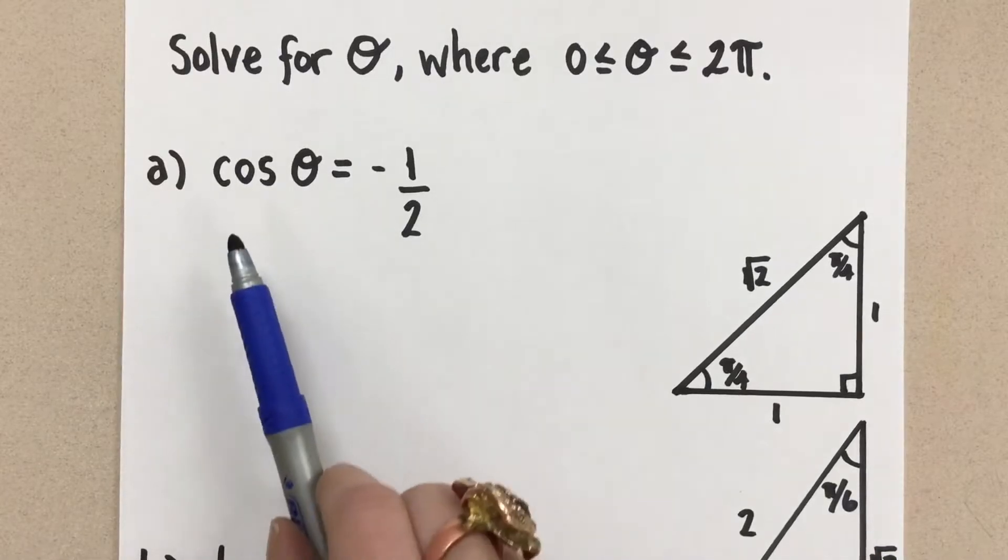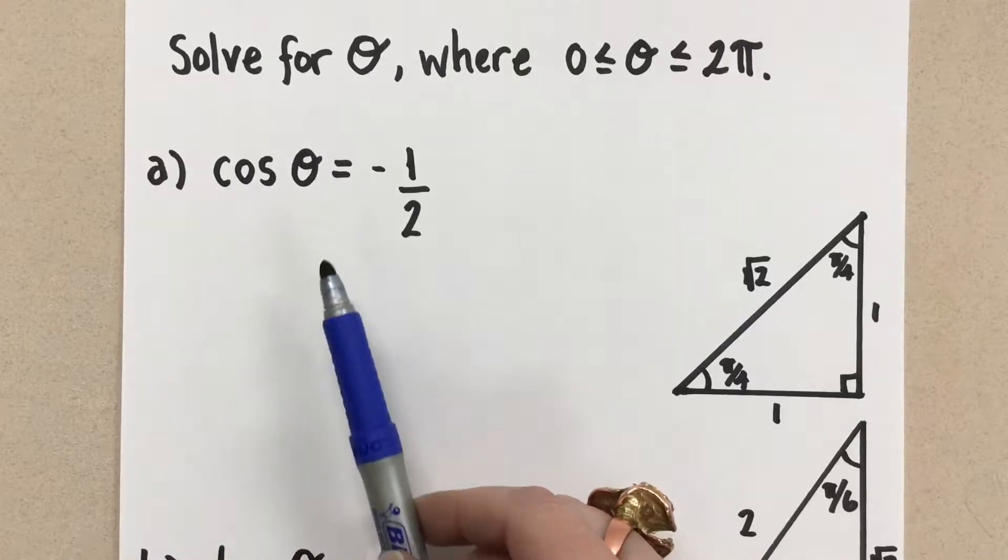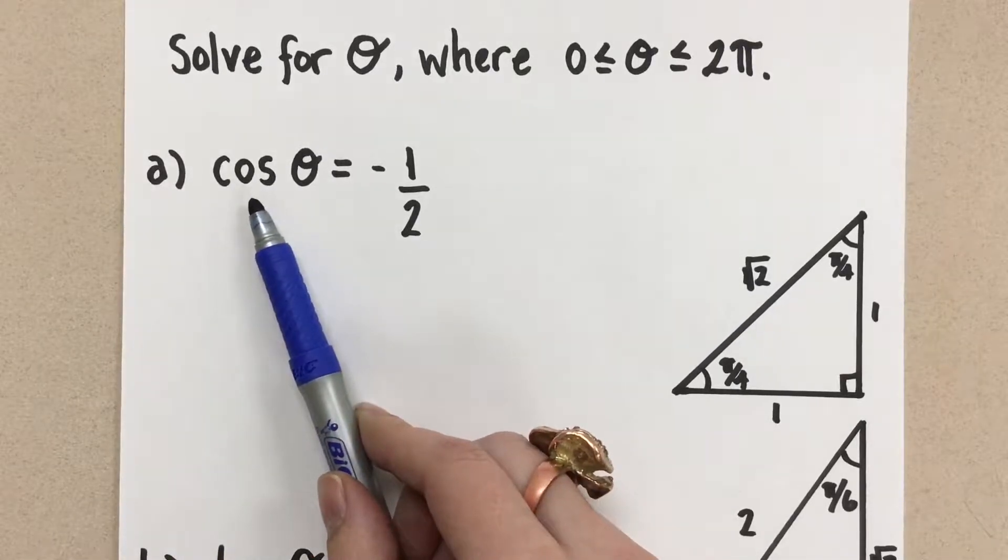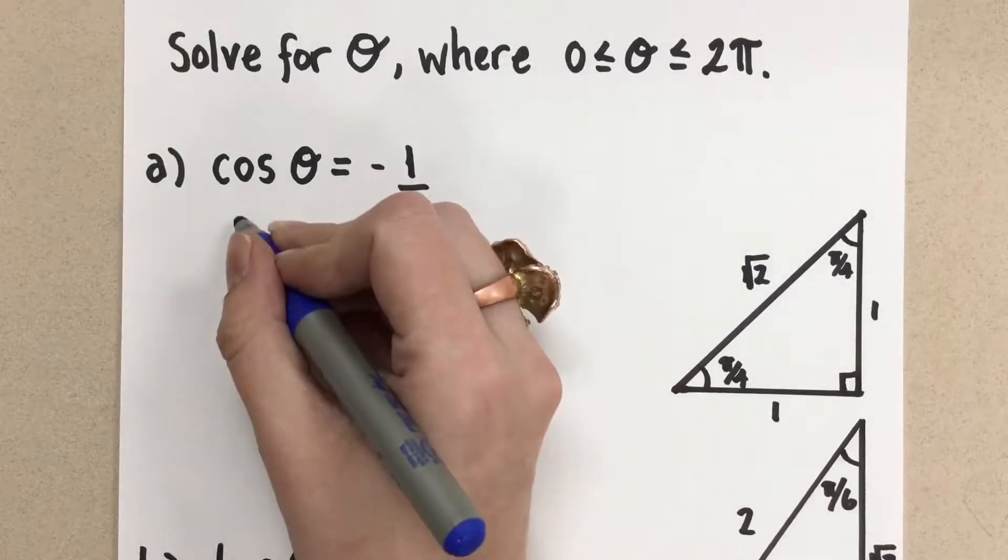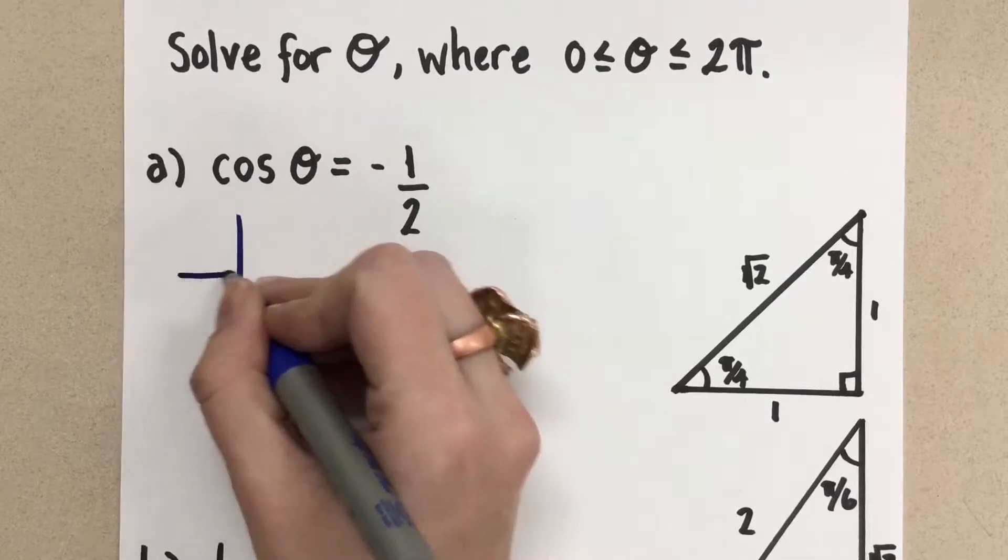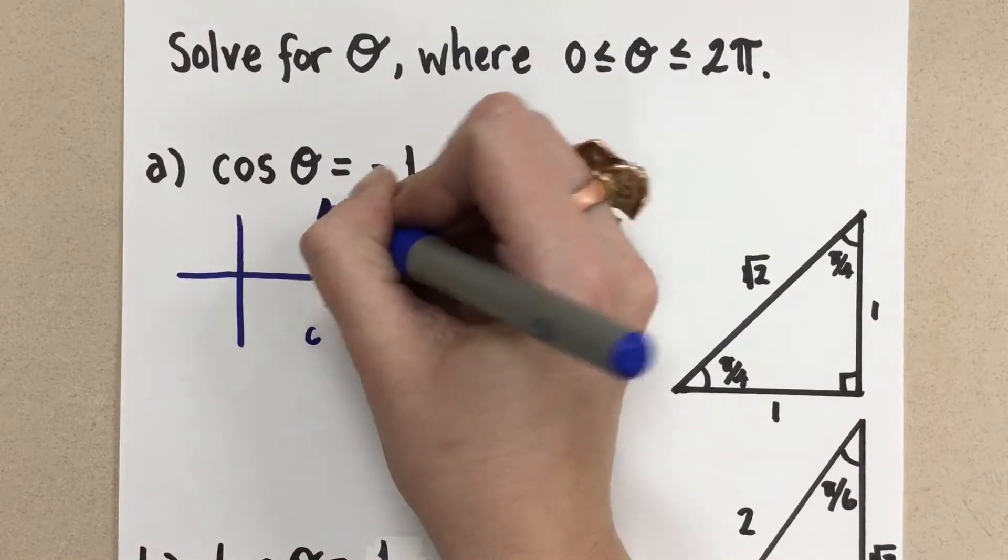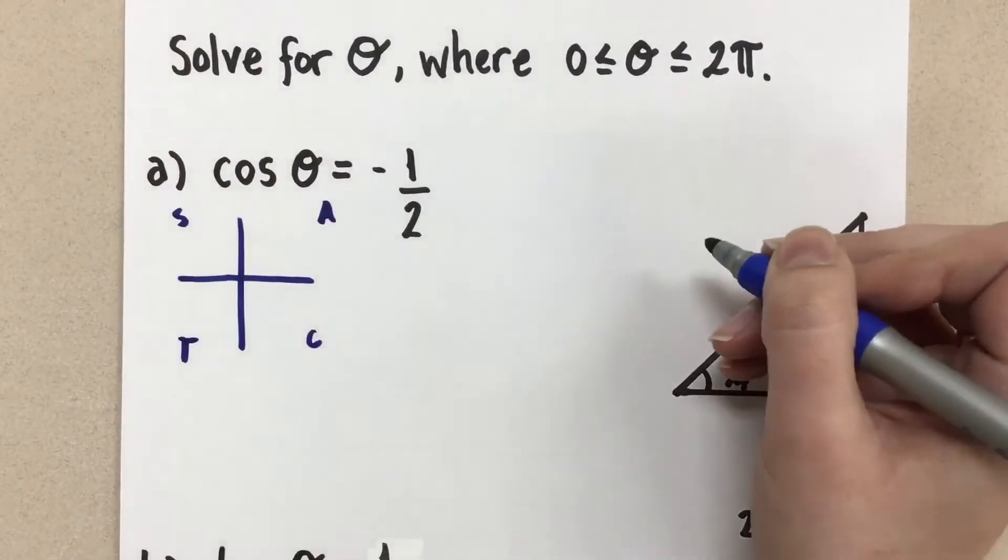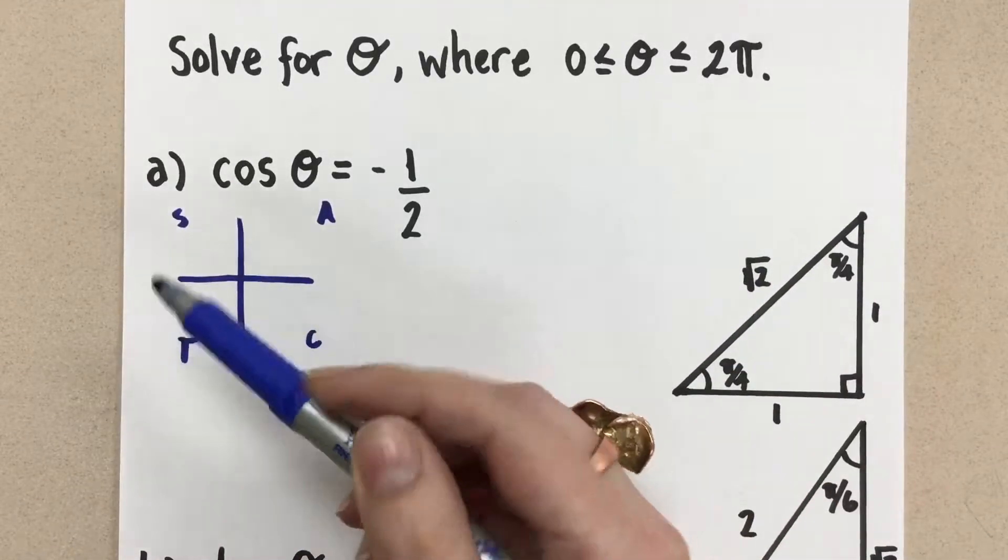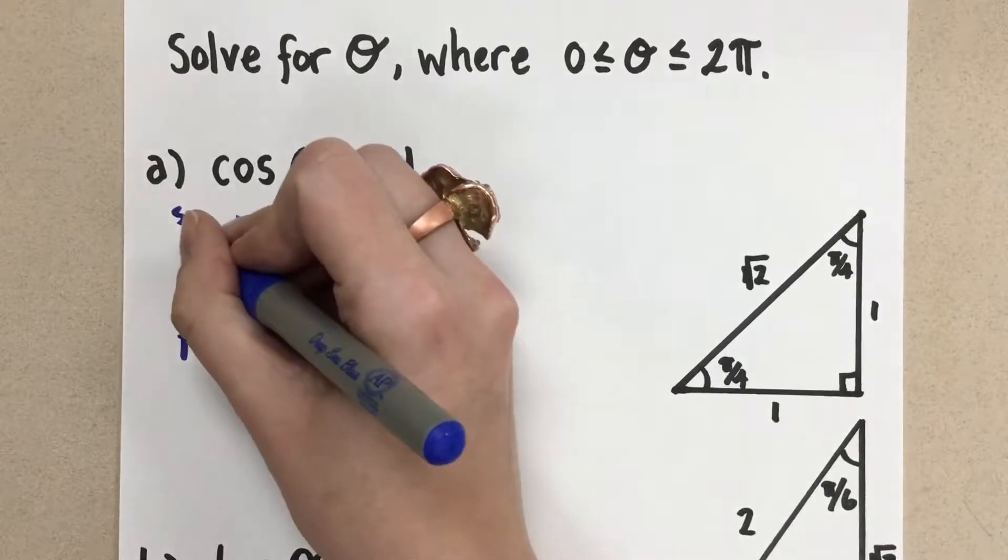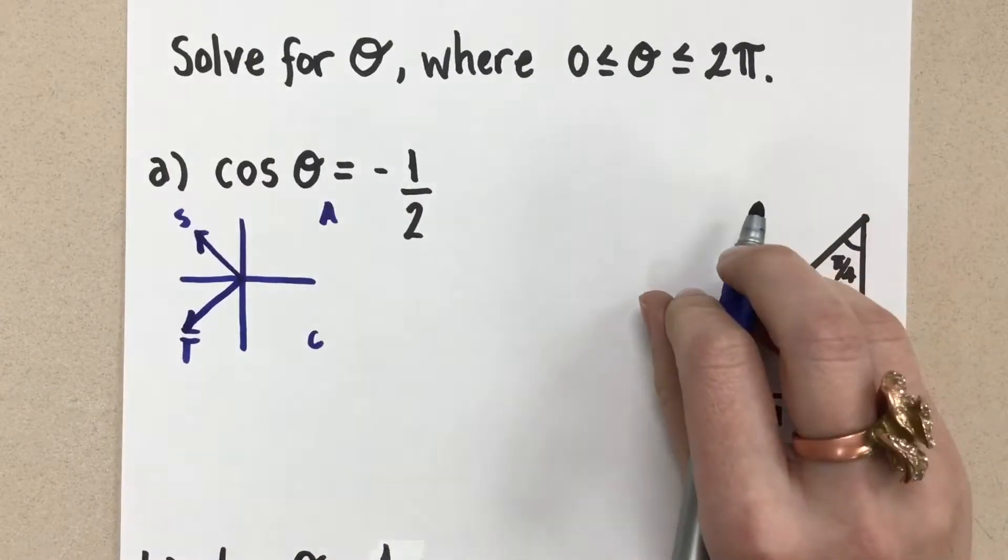So our first one is cosine theta equals negative one-half. The first thing we want to do is think about where the cosine ratio is negative on the Cartesian plane. So I'm going to do a little sketch so we can visualize this. And according to the CAST rule, we know that the cosine ratio is negative in the second and the third quadrants. So I'm going to put terminal arms in the second and the third quadrants just so I have a visual of where the angles are going to end up.